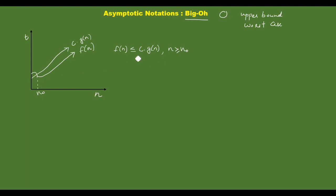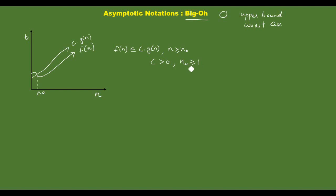f of n is less than or equal to c into g of n, and the relationship holds for all n greater than or equal to n-naught. The constant c should be greater than 0, and n-naught is a particular input whose value should be greater than or equal to 1.